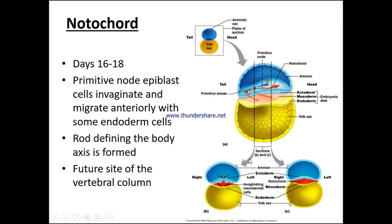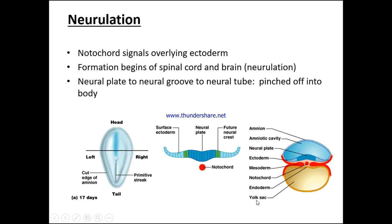Here we can see from the right and from the left, we have the invaginating mesodermal cells between the endoderm and the ectoderm, and this is going to start to make more sense as we look at how this all comes in and ultimately folds and zippers together.